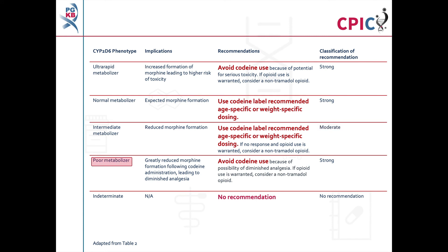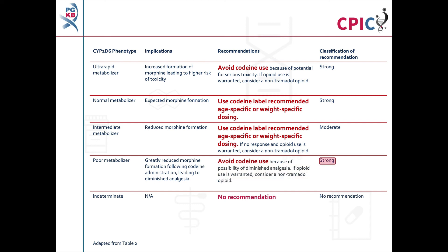Patients with a CYP2D6 poor metabolizer phenotype will have greatly reduced morphine formation leading to diminished analgesia. Codeine should be avoided in these patients. If opioid use is warranted, consider using a non-tramadol opioid. This is a strong recommendation. No recommendation is given for patients with the CYP2D6 indeterminate phenotype.